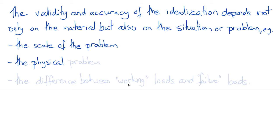It also depends on the physical problem that we're trying to solve. For example, the flow of air in the lungs or the flow of blood in the blood vessels can be accurately approximated as an incompressible flow. Blood and air for those problems can accurately be approximated as incompressible fluids.